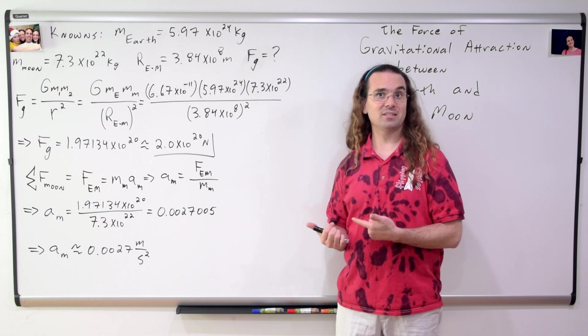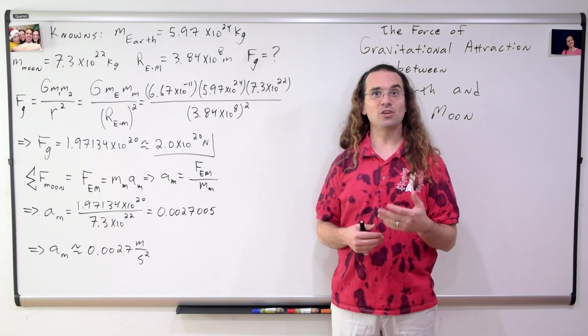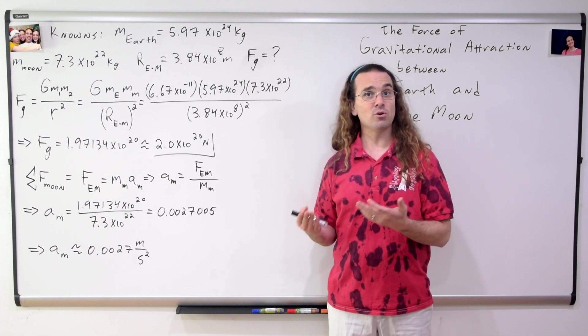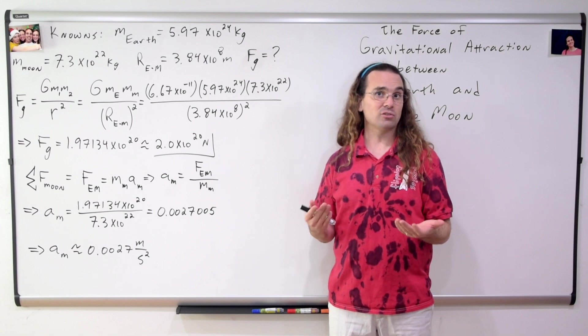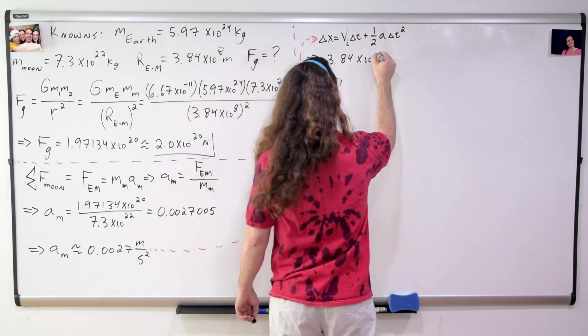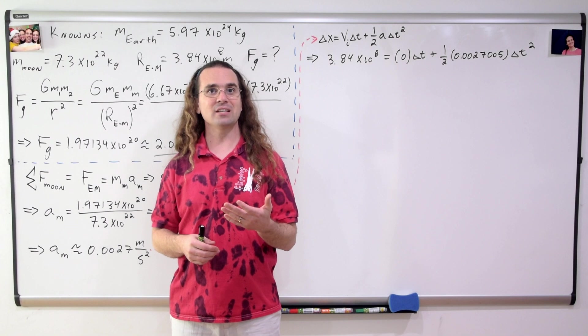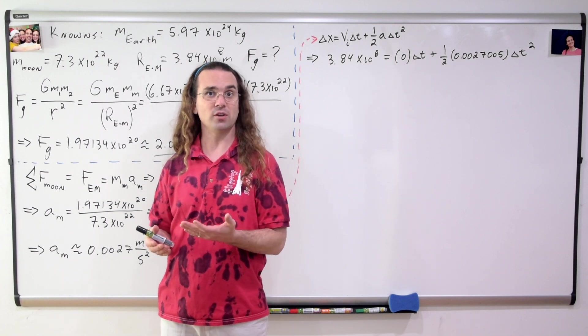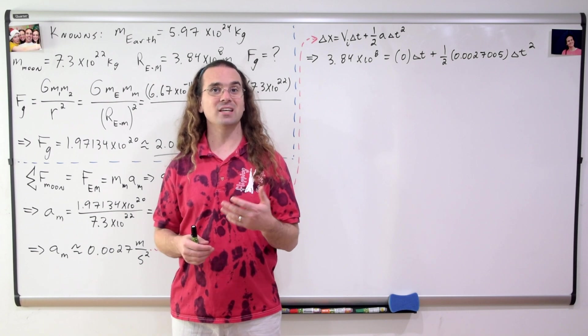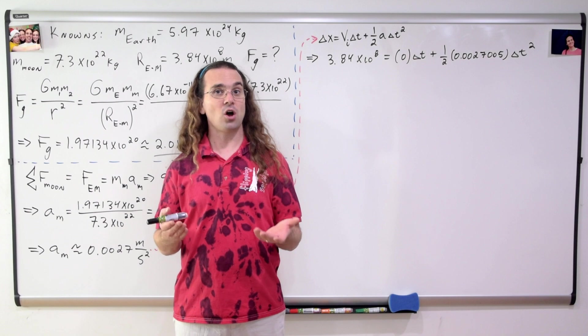And notice that acceleration is a constant number, therefore we can use a uniformly accelerated motion equation to determine how long it is before the Moon crashes into the Earth and destroys all life on the planet. The displacement of the Moon, or the mean distance between the Earth and the Moon, equals the velocity initial of the Moon, which, relative to the Earth, is zero, times change in time, plus one half times the acceleration of the Moon times the change in time squared.